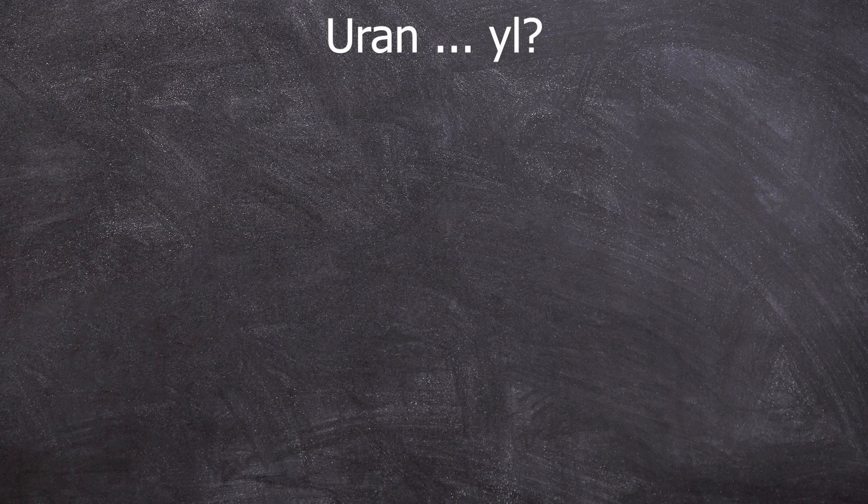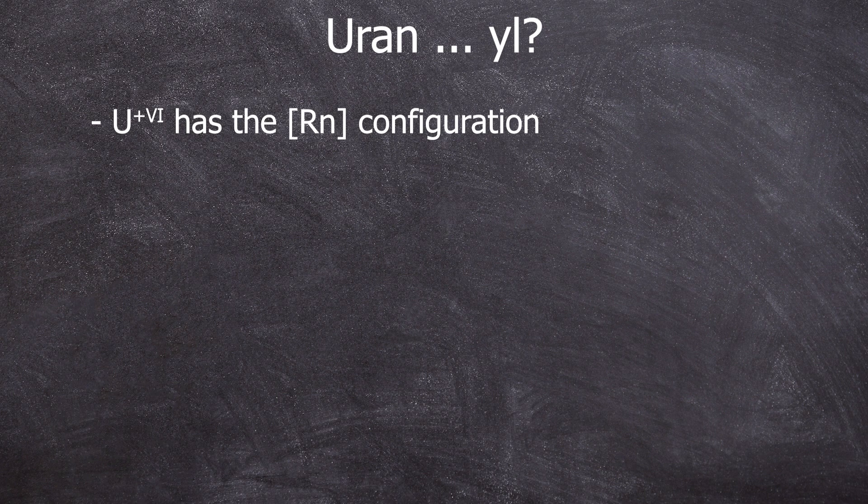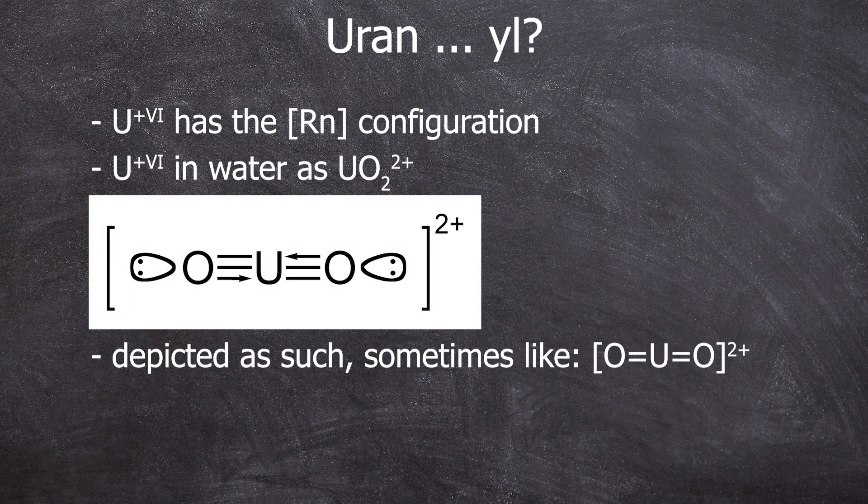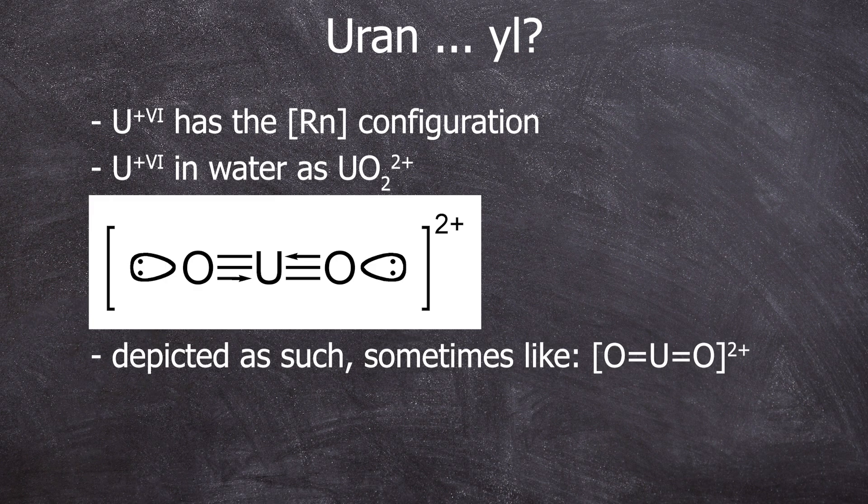So, what just happened? First, let's talk about hexavalent uranium. It has the radon configuration and a hypothetical uranium 6 plus ion in aqueous solution has too high of a charge density to exist as such in water. It exists as the uranyl ion.